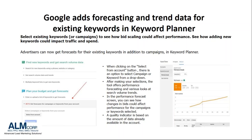Advertisers can now get forecasts for their existing keywords in addition to campaigns in the Keyword Planner. If you haven't checked out the feature in the Keyword Planner, we definitely think it's worth checking out. If you refer to the image on our template, you'll find that by selecting the "from account" button, there's an option to select a campaign or keyword from a drop-down. After making your selection, the tool offers performance forecasting and various looks at search volume trends.